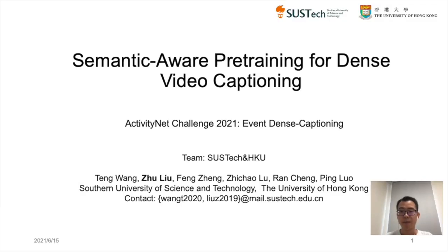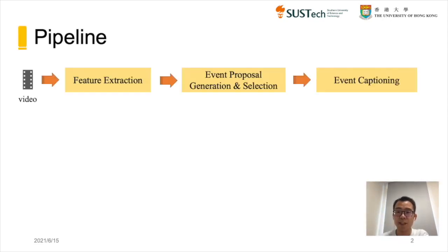Hello everyone, my name is Zhu Liu, a master's student from Southern University of Science and Technology. I will introduce our solution to ActivityNet Challenge, namely semantic-aware pre-training for dense video captioning. Dense video captioning is a multi-task problem which aims to produce both the locations and the captions of all events in the video. We tackle this task in a three-stage way: first, we extract video features by a pre-trained action recognition backbone; then localize possible events by generating and selecting event proposals; and finally, we perform event captioning to obtain corresponding captions.